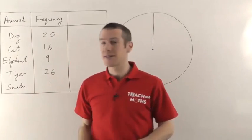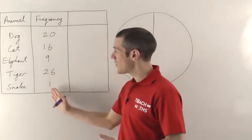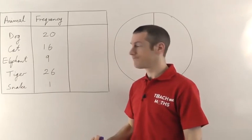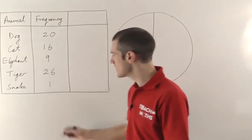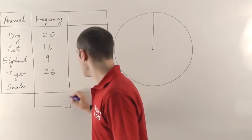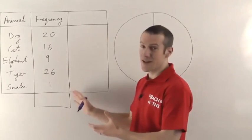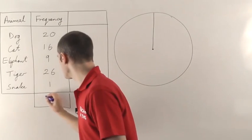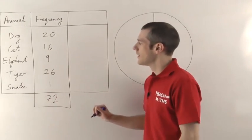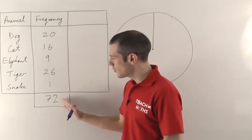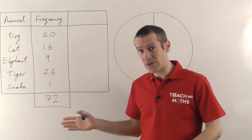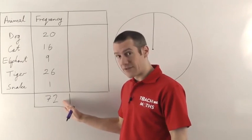In order to do that the first thing you need to know is how many people you've got all together. So you add up all your frequencies. Now I have already carefully constructed my frequencies so they should add up to 72. So the total number of people who answered my questionnaire comes to 72.